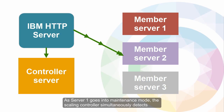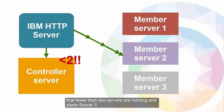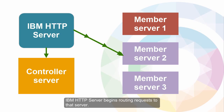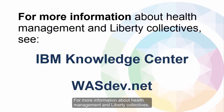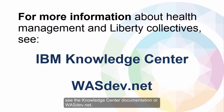As Server 1 goes into maintenance mode, the scaling controller simultaneously detects that fewer than two servers are running and starts Server 3. IBM HTTP Server begins routing requests to that new server. For more information about Health Management and Liberty Collectives, see the Knowledge Center documentation or wasdev.net.